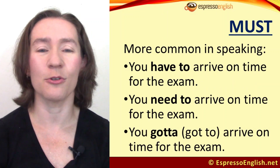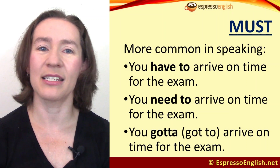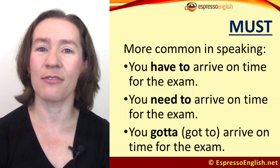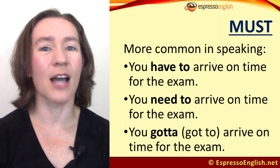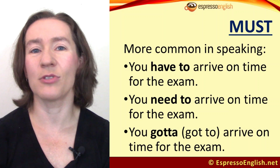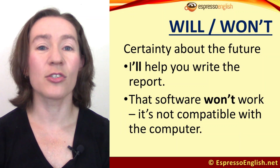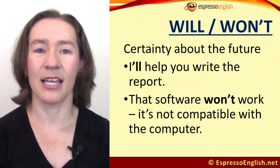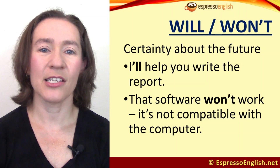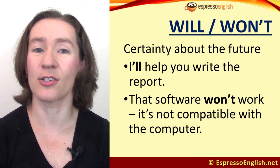In spoken English it's much more common to use need to, have to, and got to — that's informal — for requirements instead of must. So we could say: 'You have to arrive on time for the exam,' 'You need to arrive on time,' or informally 'You gotta arrive on time.' Gotta is very informal and typically only used in spoken English. We use will and won't to express certainty about the future — for example: 'I'll help you write the report' or 'That software won't work — it's not compatible with the computer.'